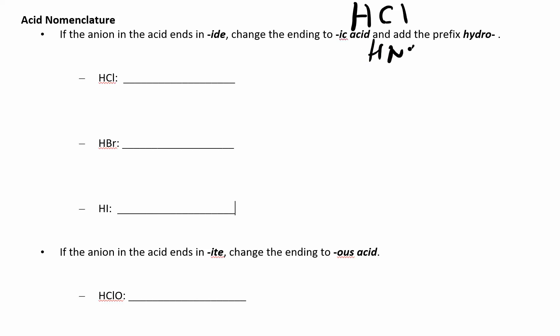HNO3, that's an acid. So how do we name it? It really depends on what's attached to that hydrogen. For HCl, you're going to figure out what the ending is for that anion and then change it depending on what it ends in. There's three possible endings: it can end in -ide, it can end in -ate, or it can end in -ite.